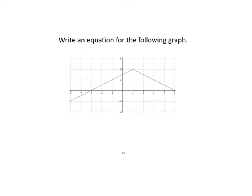Normally the vertex for absolute value functions is at the origin. I see that this one has been shifted right 1 and up 2, so it's going to be x minus 1 because it went right 1, and then up 2.